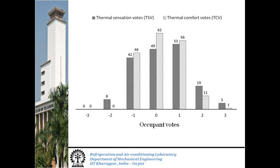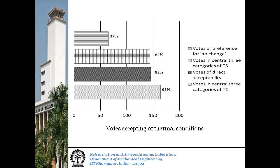This here is the distribution of votes across the thermal sensation and thermal comfort scales. On both scales, majority of the votes are in the central three categories. Acceptance of thermal environment among the occupants was estimated using four different criteria: votes in the central category of sensation scale, votes in the central category of comfort scale, votes that answer acceptable to the thermal acceptability question, and votes that say no change for the thermal preference question.